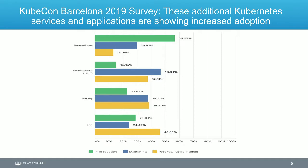Prometheus turns out to be the most popular tool for application monitoring in the Kubernetes community, with over 56% of participants saying they're using it in production already, followed by Istio, Jaeger for tracing, and EFK. Prometheus is something that as soon as you have an application in production, developers need to monitor it — making sure it's running with the right performance levels, able to scale, and able to troubleshoot things when services go down or an application is consuming too much CPU.